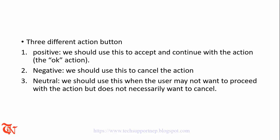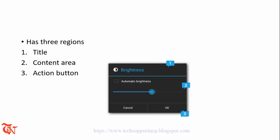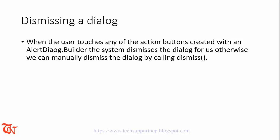There are three types of action buttons: positive, negative, and neutral. We should use the positive button to accept and continue with the action, the negative button to cancel the action, and the neutral button when the user may not want to proceed but does not necessarily want to cancel. After creating and building the dialog box we have to dismiss it — when the user clicks any action button, the system will automatically dismiss the dialog, or we can manually dismiss it by calling the dismiss method.